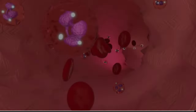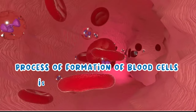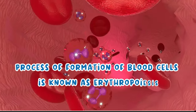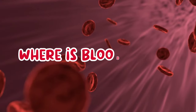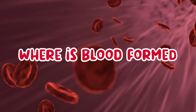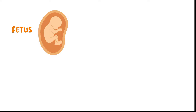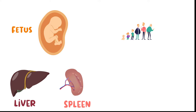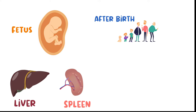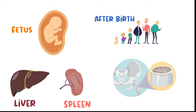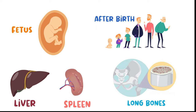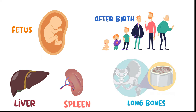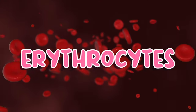The process of formation of blood cells is known as erythropoiesis. But where is blood formed? In fetal life, the liver and spleen are the primary sites for erythropoiesis. After birth, erythropoiesis occurs in the red bone marrow of long bones.